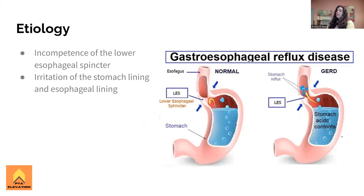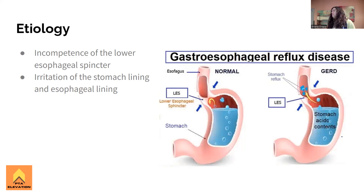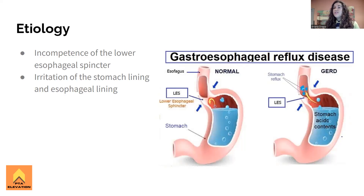The etiology of GERD is essentially that the lower esophageal sphincter just stopped working — it becomes incompetent, meaning it's allowing backflow of stomach acids into the esophagus. Stomach acid has a pretty low pH, around two, which is very acidic. We don't want that getting into the esophagus because it causes irritation and can cause cells at the bottom of the esophagus to mutate and potentially cause esophageal cancer.